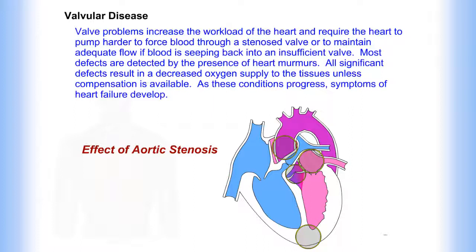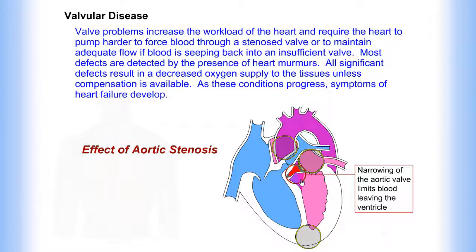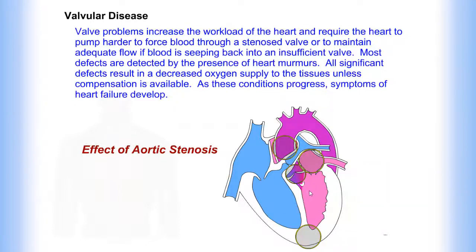Most defects are detected by the presence of heart murmurs. All significant defects result in a decreased oxygen supply to the tissues unless compensation is available. As these conditions progress, symptoms of heart failure develop, including decreased cardiac output, incomplete atrial emptying, narrowing of the aortic valve limiting blood leaving the ventricle, and left ventricular hypertrophy.